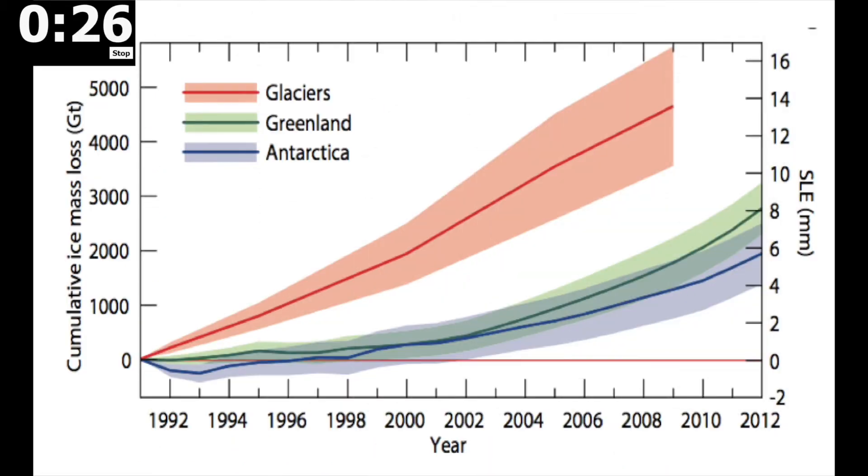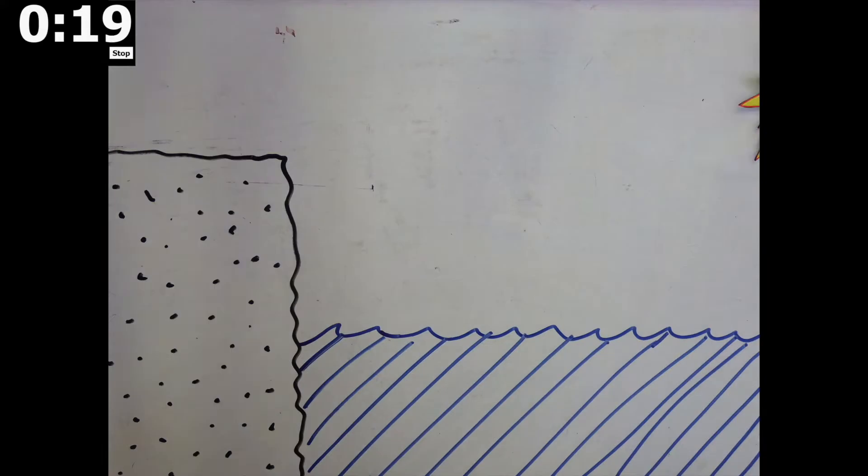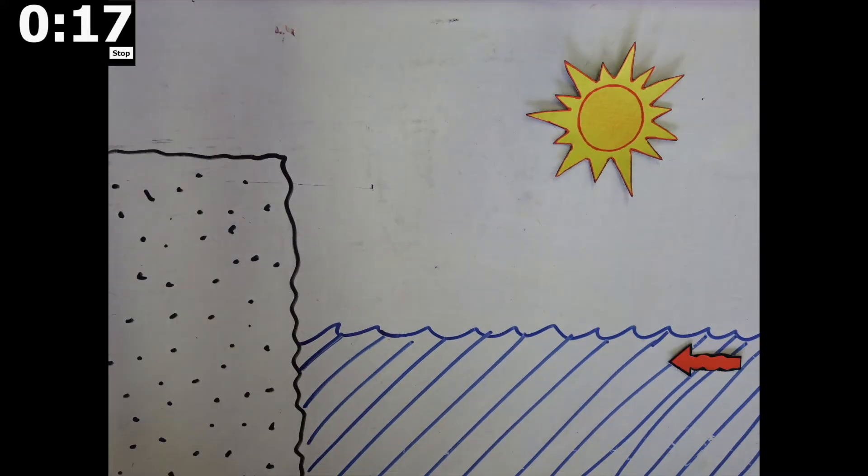As air and ocean temperatures continue to increase, glacial retreat has accelerated further, with calving accounting for an increase in the rate of mass loss from the Greenland and Antarctic ice sheets.